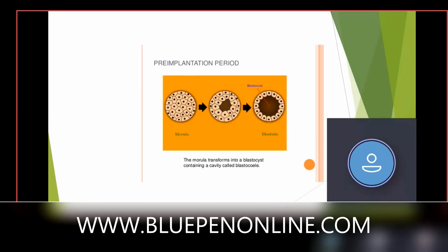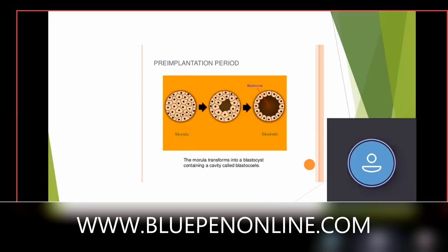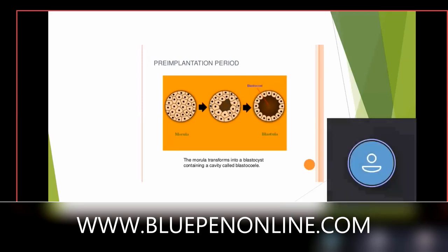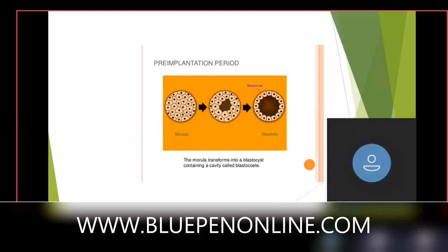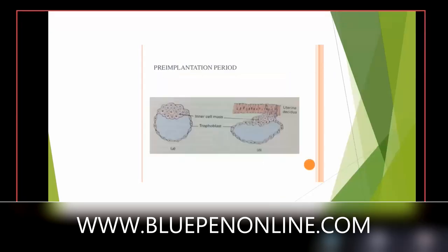After the morula stage is reached, you form a blastocoel — that is an empty space in the middle surrounded by cells. This empty space is called the blastocoel, and the whole cell structure is called the blastocyst. The blastocyst is basically a hollow cavity lined by epithelium. The blastocyst has an empty space called the blastocoel, which is lined by epithelium.